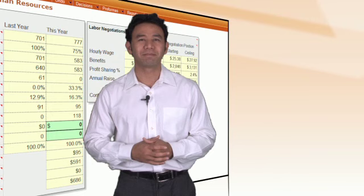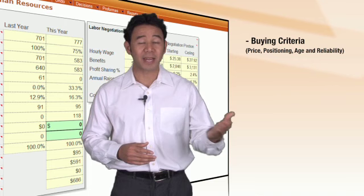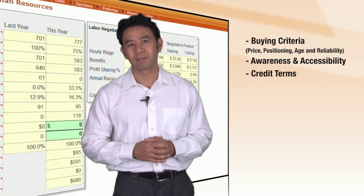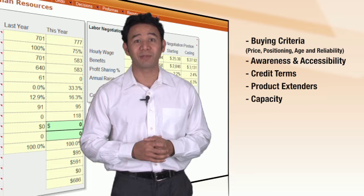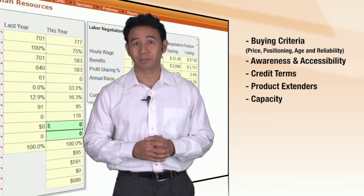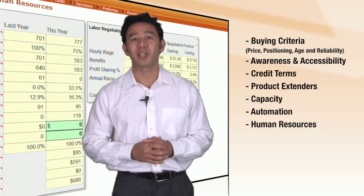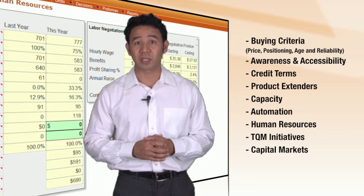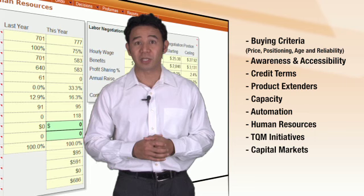Now let's sum it all up. Where is it possible to gain a competitive advantage? Buying criteria, price, positioning, age and reliability, awareness and accessibility, credit terms. Product extenders. Capacity to produce sufficient inventory efficiently. Remember that idle capacity does not produce inventory. Automation, which leads to a cost advantage and lower prices. Human resources. TQM initiatives, which will be introduced in round four. And for the capital markets, lower leverage, which is attractive to bondholders and bankers. And higher earnings per share, which is attractive to stockholders. Good luck.